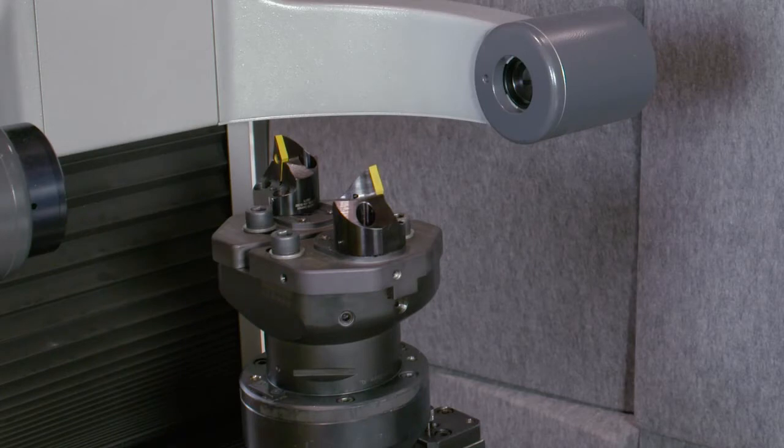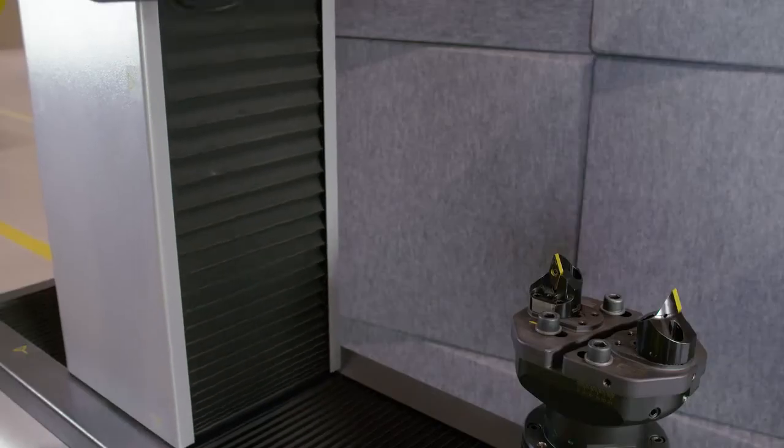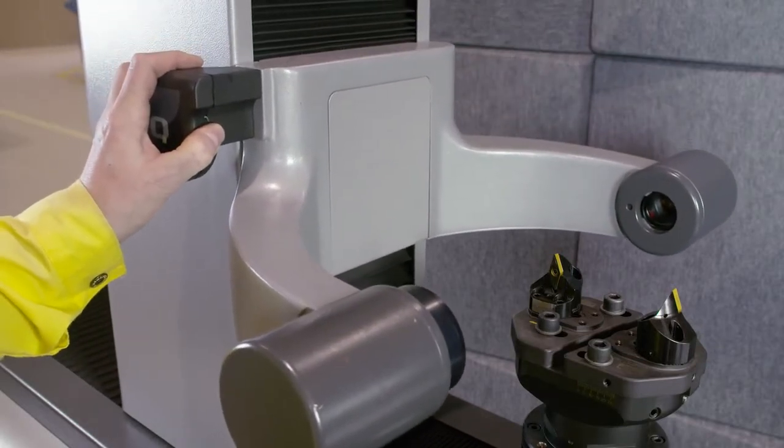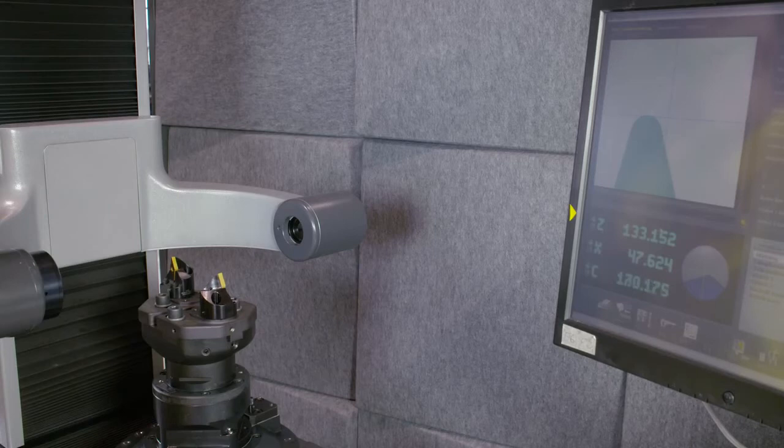To pre-set the cutter, it is recommended to use an optical pre-setting unit. We are now going to set the tool radius to the same diameter as the groove diameter according to step 1 in the handling instruction.